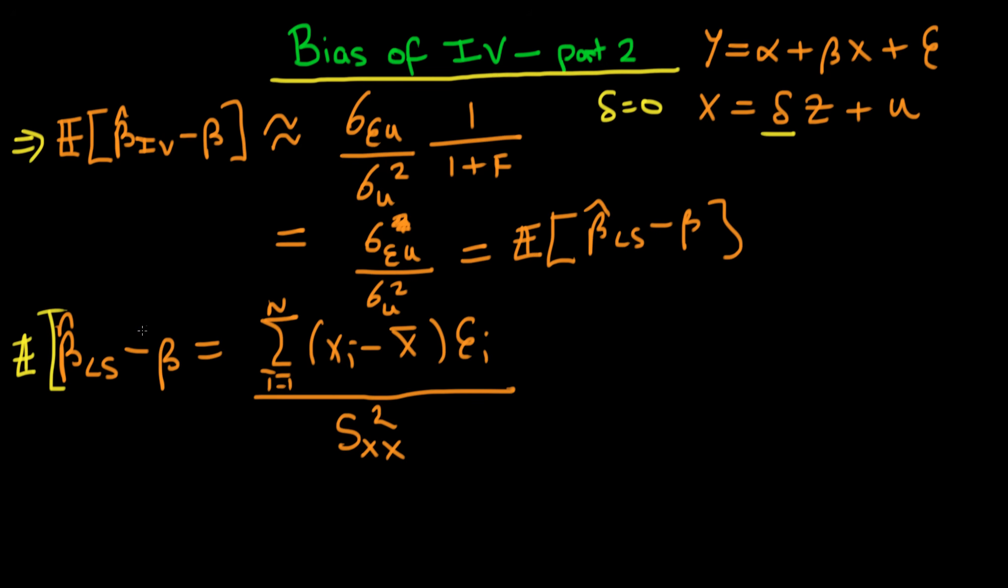When we take the expectation of both sides, we can replace the terms on the right-hand side by the population quantities if we assume that these sample quantities are unbiased estimators. Before I do that, I'm going to write 1 over n on both the top and bottom—they cancel one another out. Now on the bottom I have the sample variance of x, and then I just need to put an expectation around the whole thing.